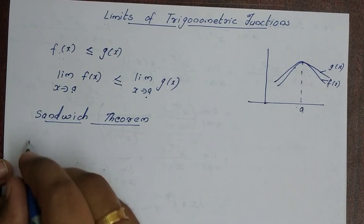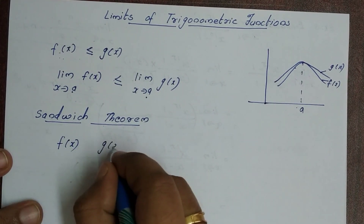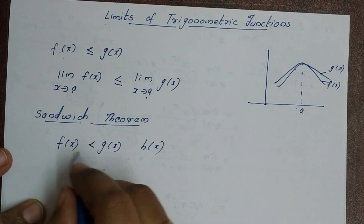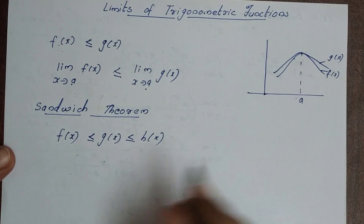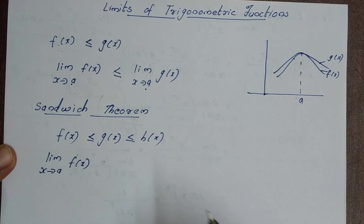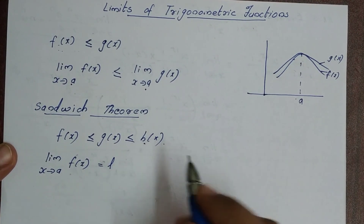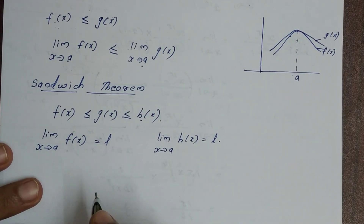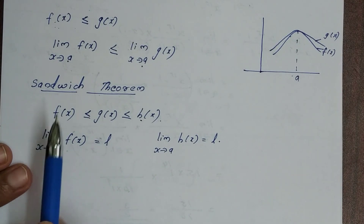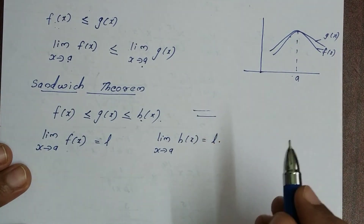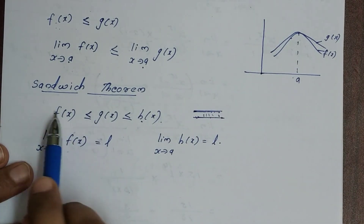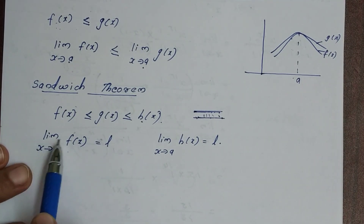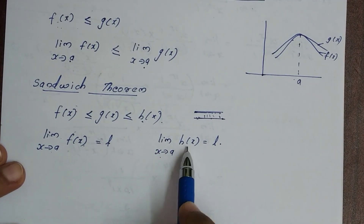Now we have the sandwich theorem. We have three functions: f of x, g of x, and h of x. If g of x is less than or equal to f of x less than or equal to h of x, and limit x tends to a of g of x equals L, and limit x tends to a of h of x equals L, then by the sandwich theorem, limit x tends to a of f of x is also equal to L.